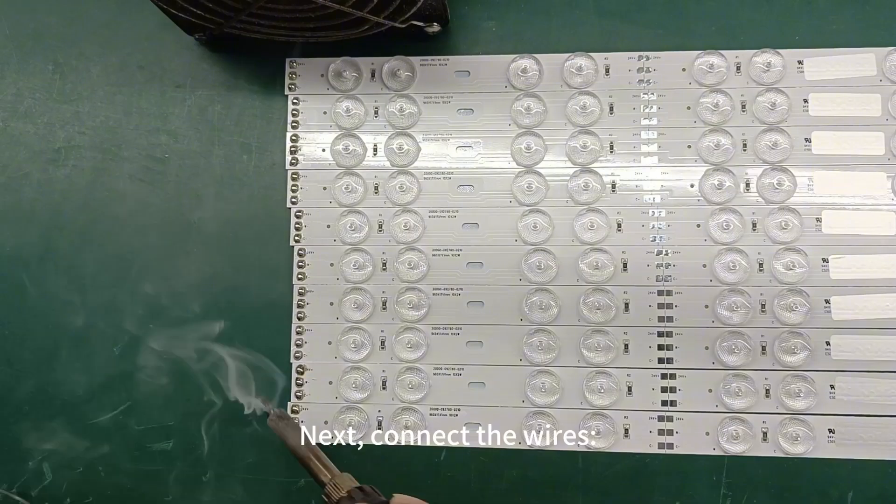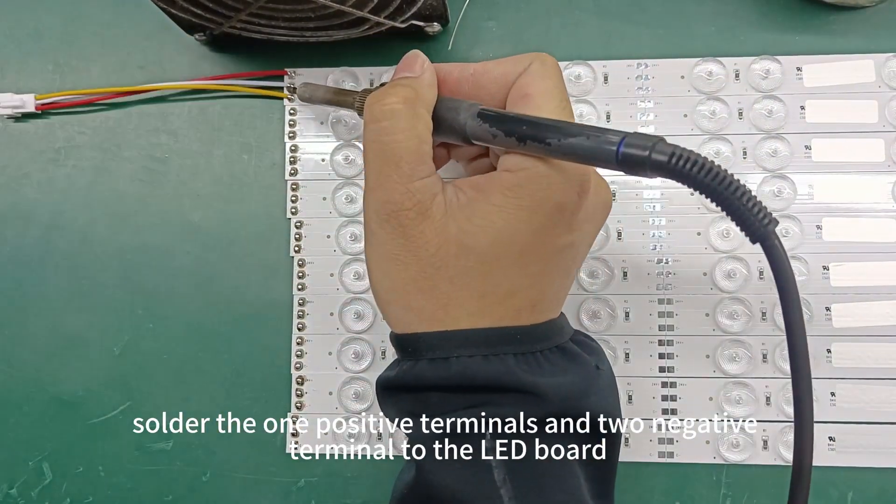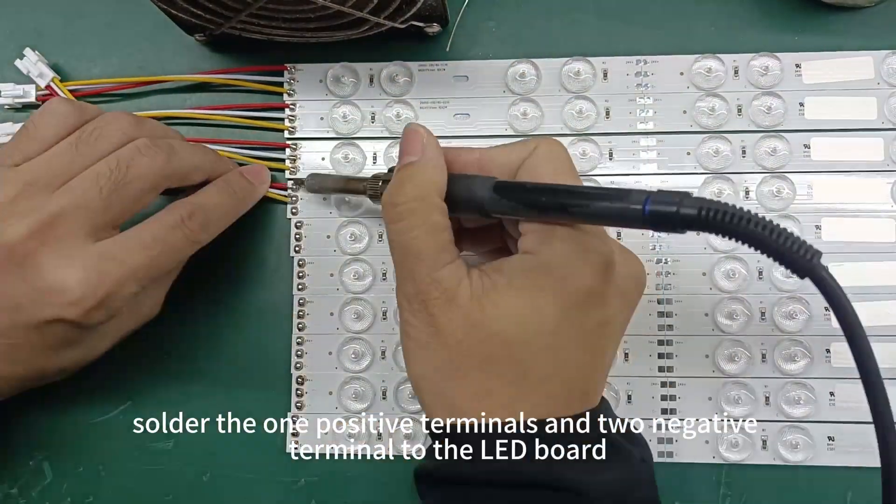Next, connect the wires. Solder the one positive terminals and two negative terminals to the LED board.